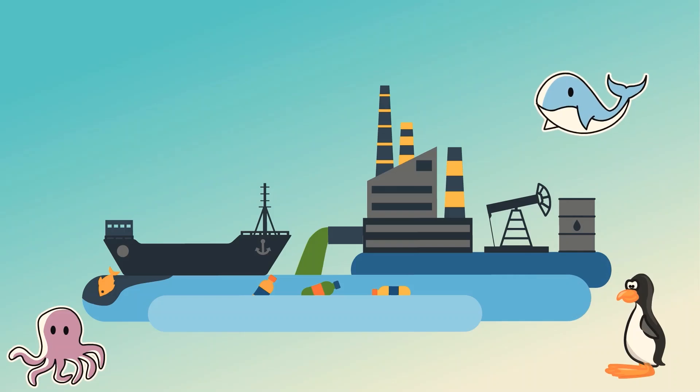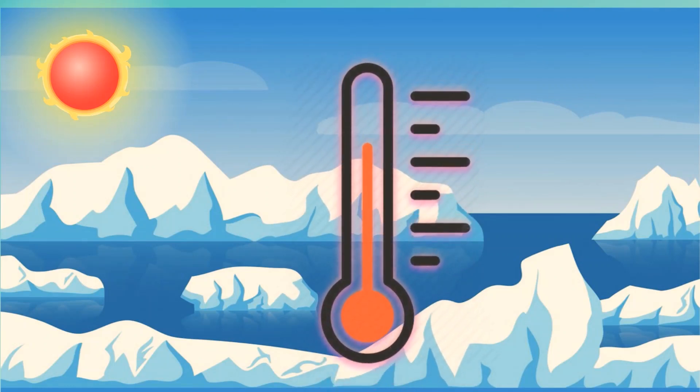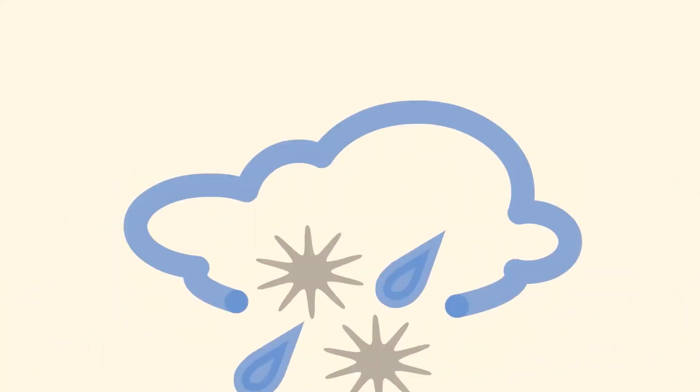Oceans have also taken up over 90% of the excess heat accumulated on Earth due to global warming. Warmer water cannot contain as much oxygen as cold water, so heating is expected to lead to less oxygen in the ocean.